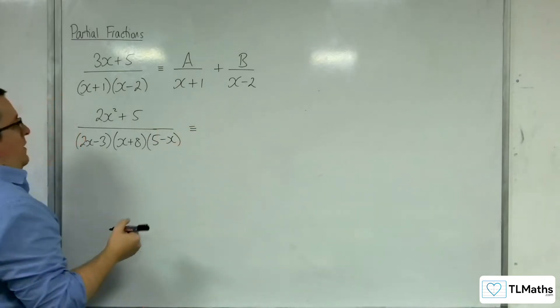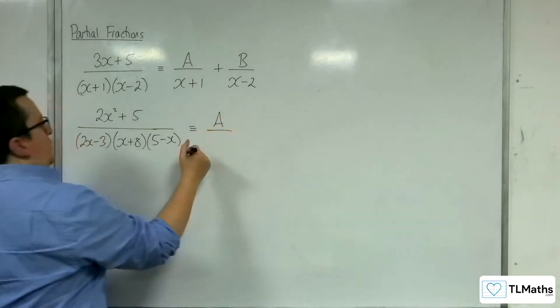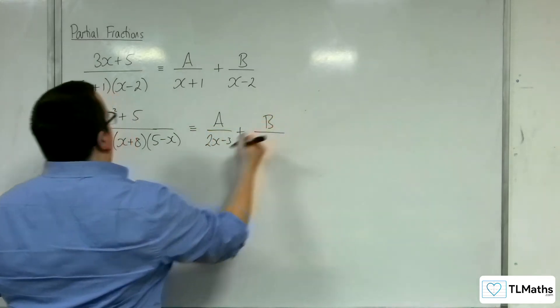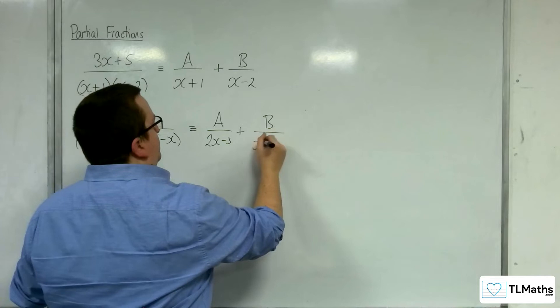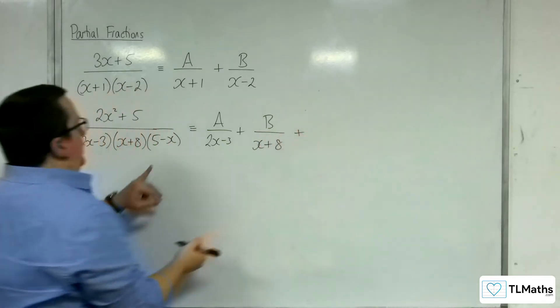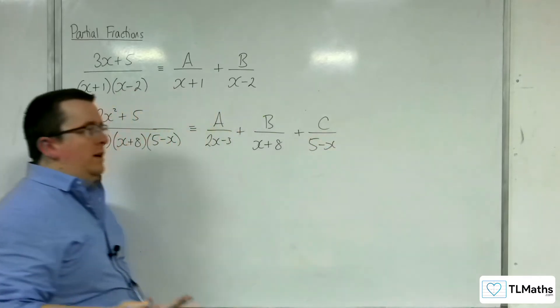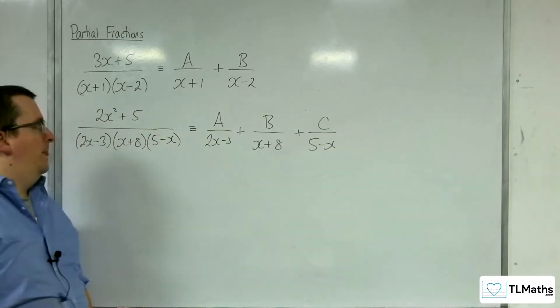And that's going to be equivalent to A over 2x-3 plus B over x+8 plus C over 5-x. And I would expect you to be able to work out A, B, and C.